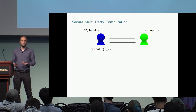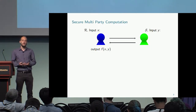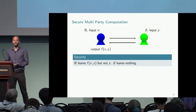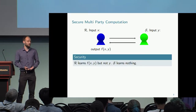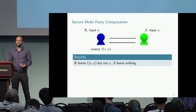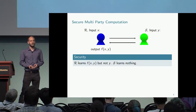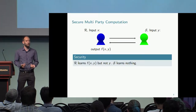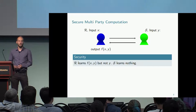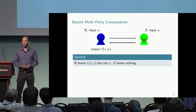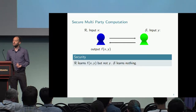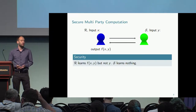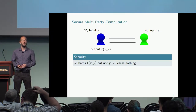Realizing multi-party computation is easy until we consider security, which really makes it a non-trivial thing to construct. We want the receiver to learn only the very minimum — the functionality evaluated on inputs X and Y — but nothing beyond that. In particular, it should not learn anything about the sender's input Y.